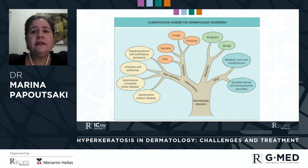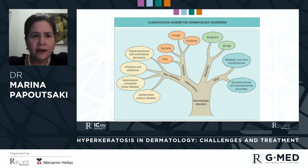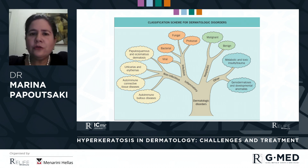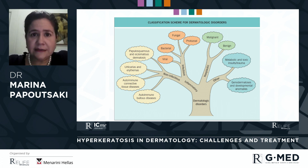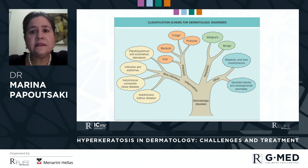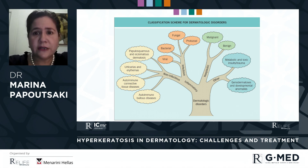If we translate this into clinical applications, here we see the tree of dermatological diseases. Hyperkeratosis can be present in different kinds of diseases across the dermatological spectrum — in non-infectious diseases like papulosquamous or autoimmune diseases, in infectious diseases like fungal diseases, malignant or benign neoplastic diseases, and others like genodermatoses.